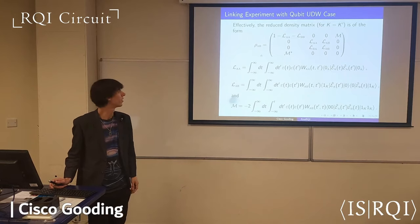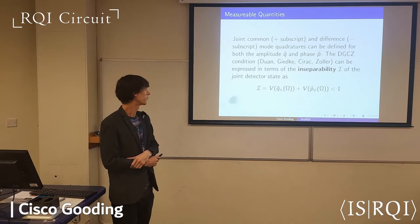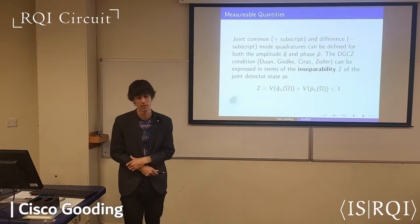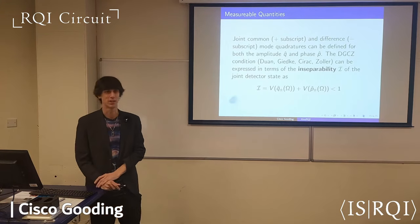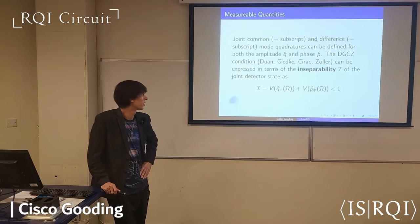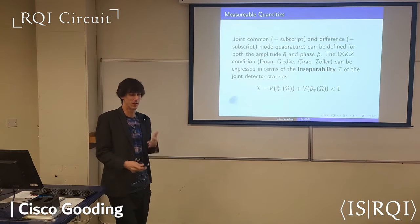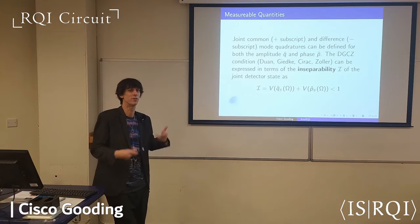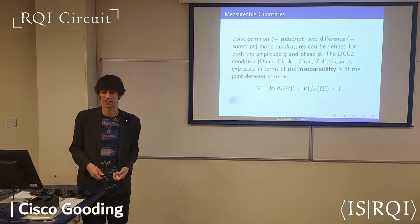This is a nice implementation to represent two Unruh-DeWitt detectors. In terms of experimentation, it's more sensible to base the entanglement condition on something called inseparability. There isn't really a finite-time version to correspond to these pulses, but we're working to establish the validity of a finite-time version. The basic idea is to measure variances of output quadratures of the two lasers — much more accessible experimentally — to characterize whether and how much entanglement has been harvested.